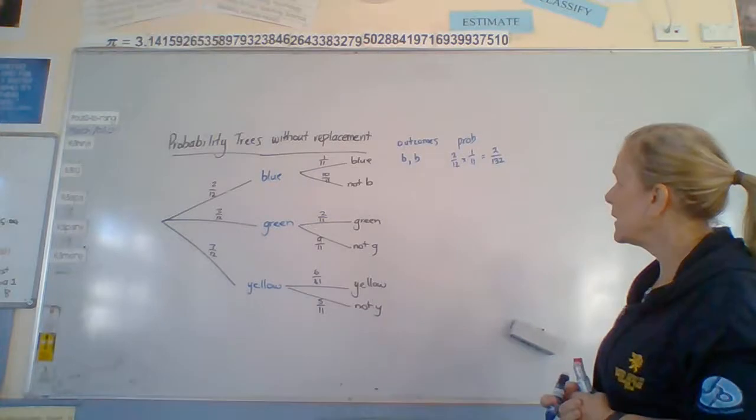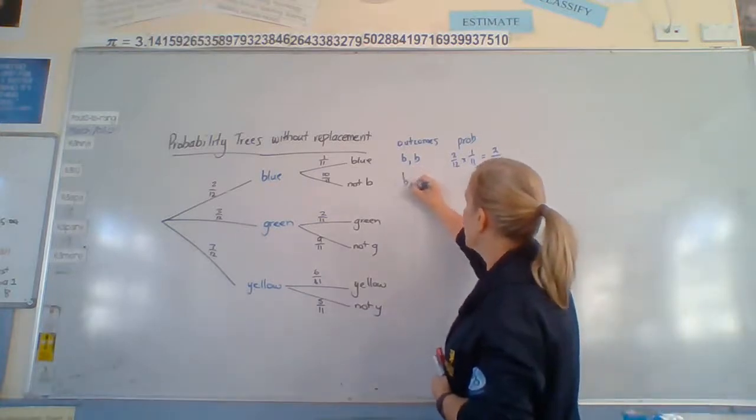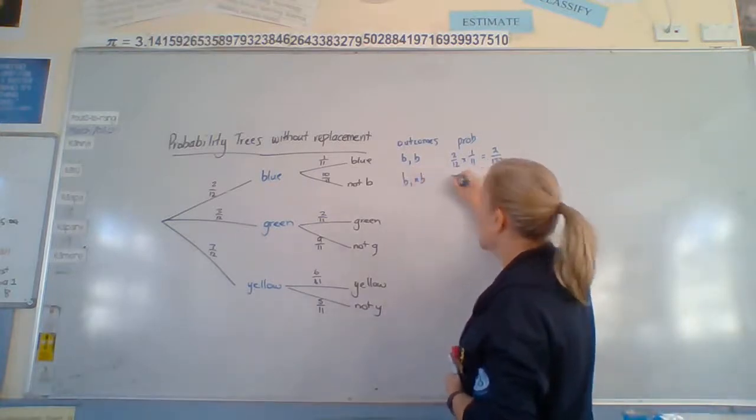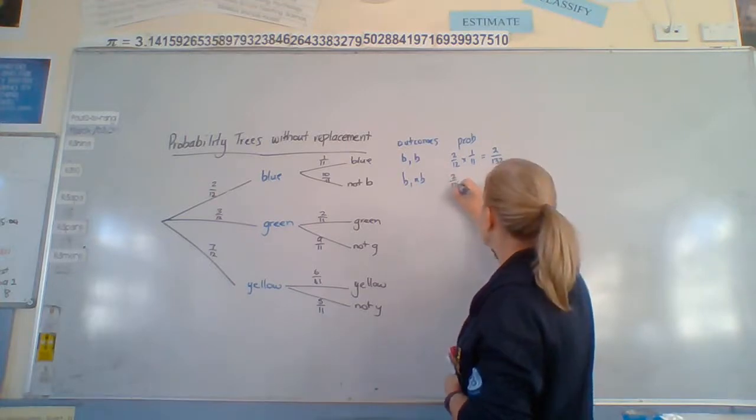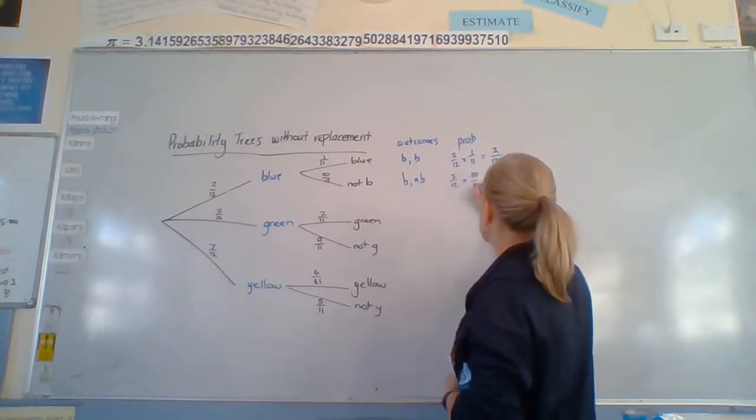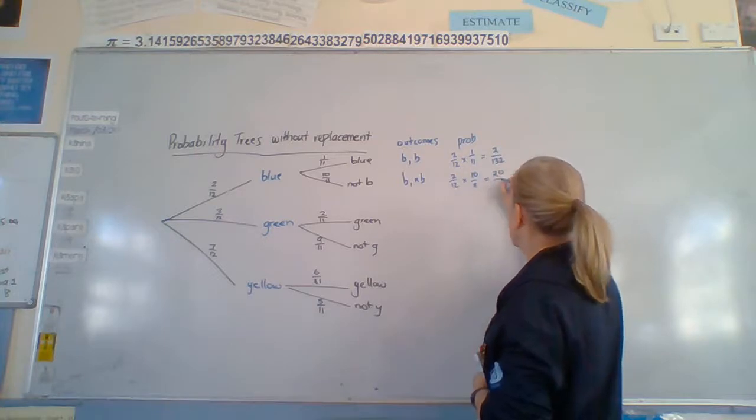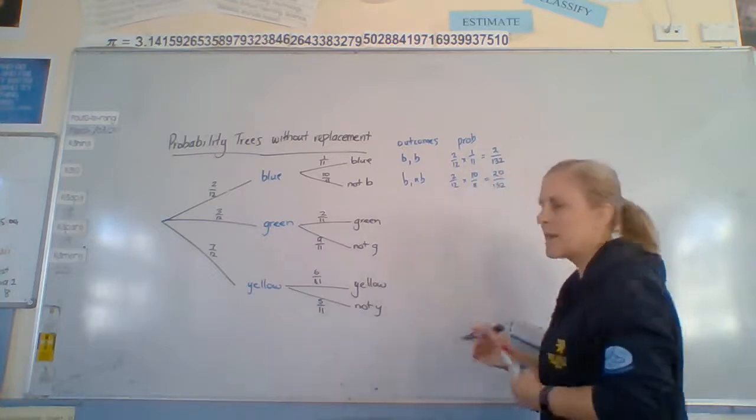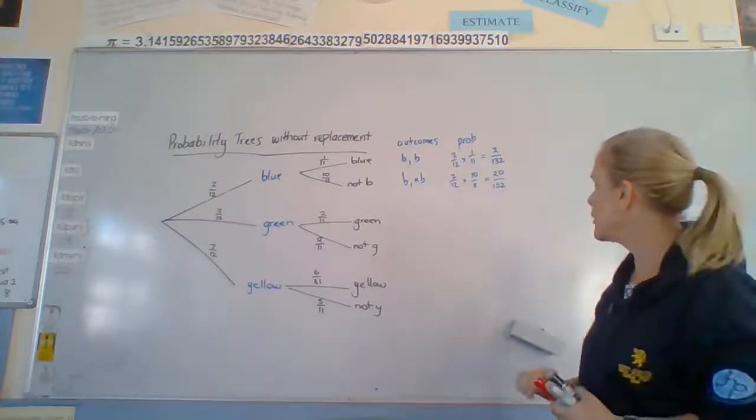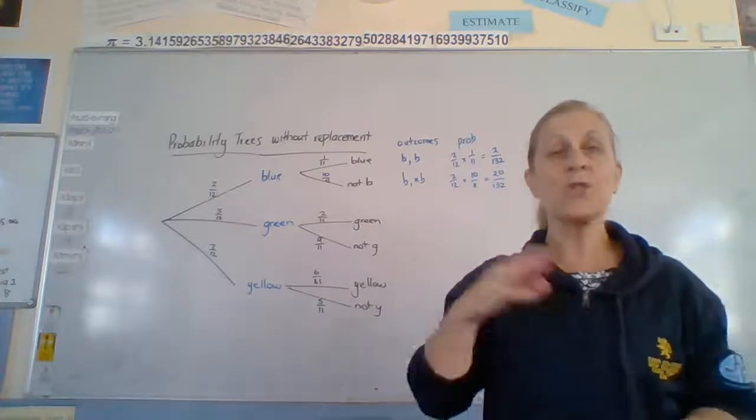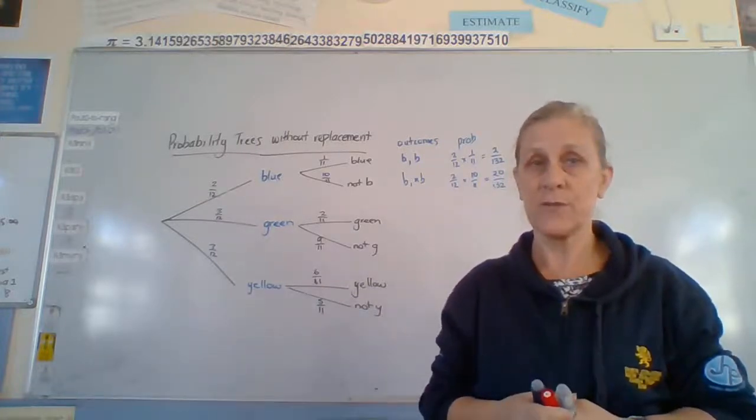All right? Et cetera, et cetera. So blue, not blue. And then 2 twelfths times 10 eleventh equals 20 over 132. And as you go down, again, this will add up to 132. But the probabilities have changed because you don't have the same number of things to choose from.